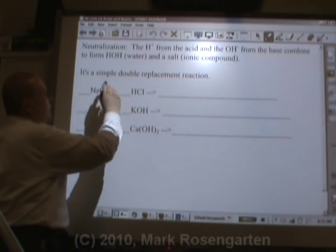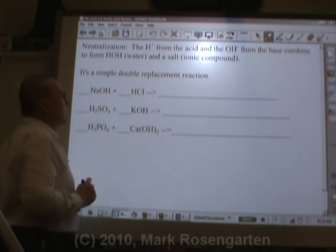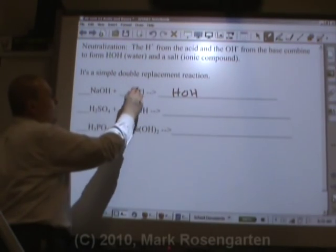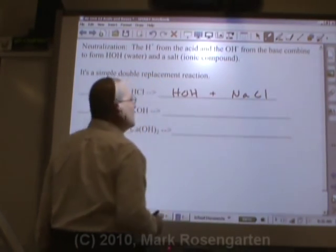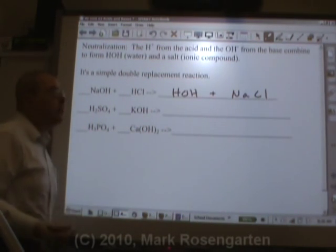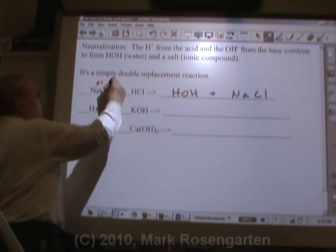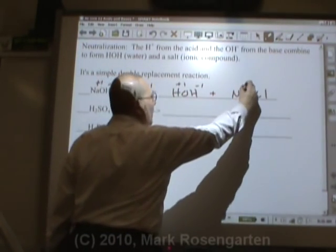You see, every H needs an equal number of OHs in order to neutralize. The H from the acid and the OH from the base come together to form water, HOH. The Na and the Cl come together to form NaCl. What about charges? Well, this is just a double replacement reaction. So whatever the charges are on the left side, they're going to be the same charges on the right side.